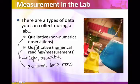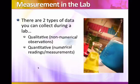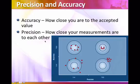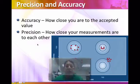And then qualitative are your non-numerical observations. So you're just making observations about color, precipitate, what did you see happen while the reaction was taking place. The other thing that goes along with that is accuracy and precision.